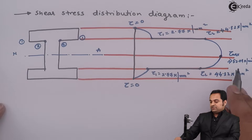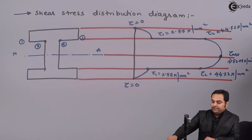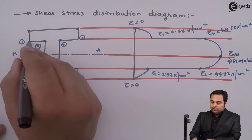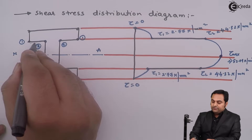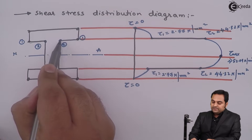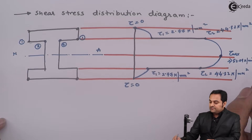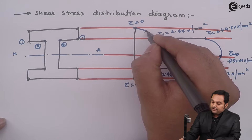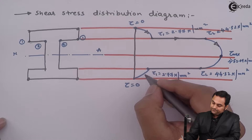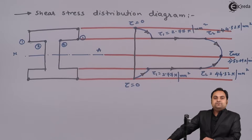This is the shear stress distribution diagram for the I-section. Shear stress is zero at the extreme fibers, 2.77 N/mm² at the flange-web junction (section 1), 44.32 N/mm² at the web side of the junction (section 2), and maximum at the neutral axis as 52.09 N/mm². The shear stress varies parabolically in the web, completing the problem.